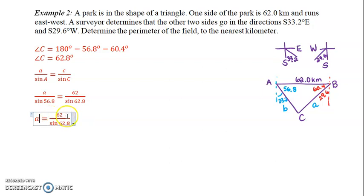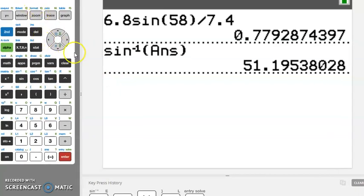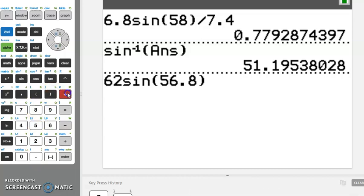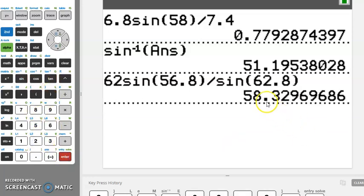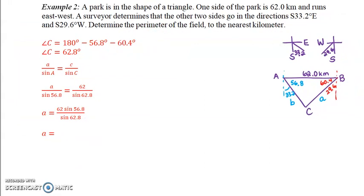Multiply both sides by sine 56.8. And then we're going to solve for A. Go to the calculator. Plug that in. So we get 62 sine 56.8, close my bracket, divide it by sine 62.8, close my bracket, hit enter. I get 58.329 kilometers. It says to the nearest kilometer, I'm going to leave that there, won't round until we're done.